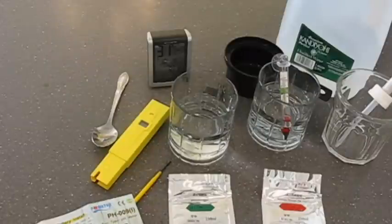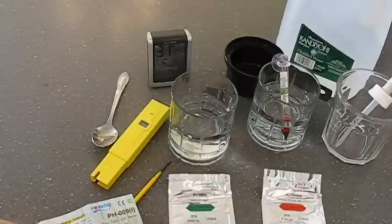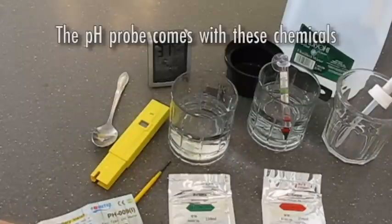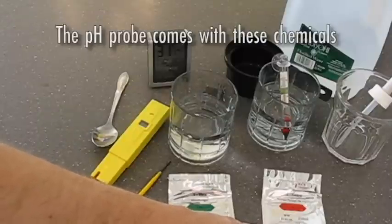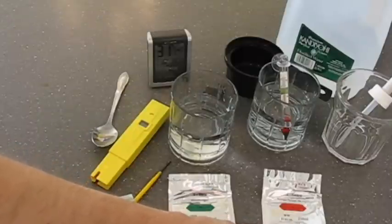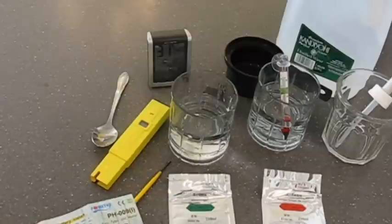This basically comes with some phosphate that when mixed with distilled water will read at 6.86 pH and some potassium hydrogen phthalate, if I'm saying that correctly, which will mix at a pH level of 4.0.